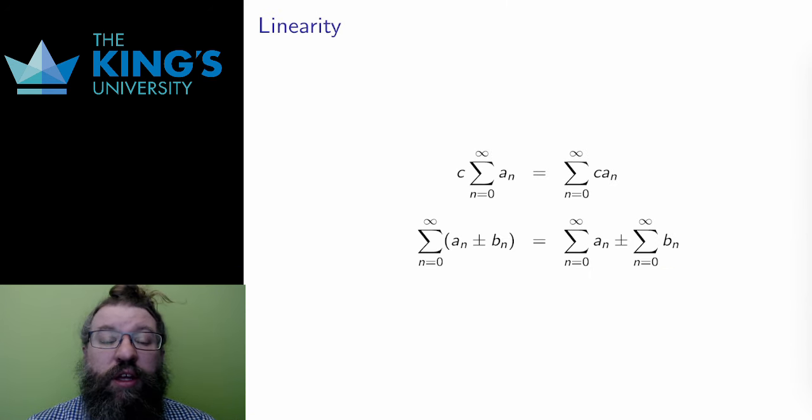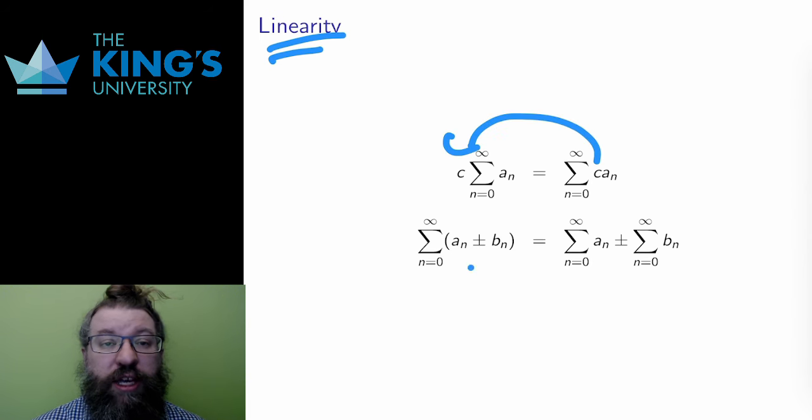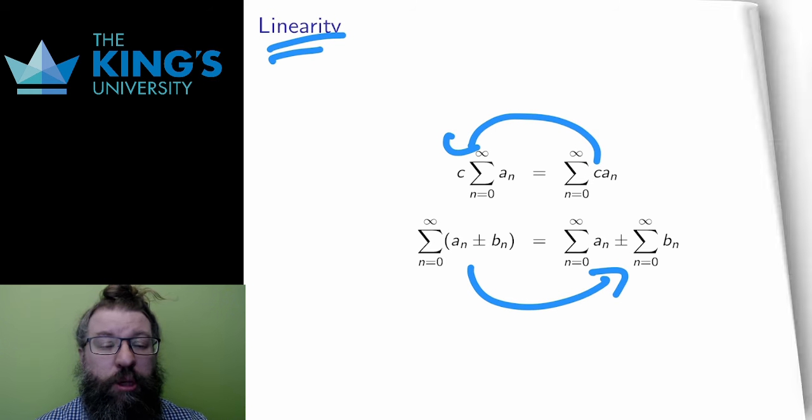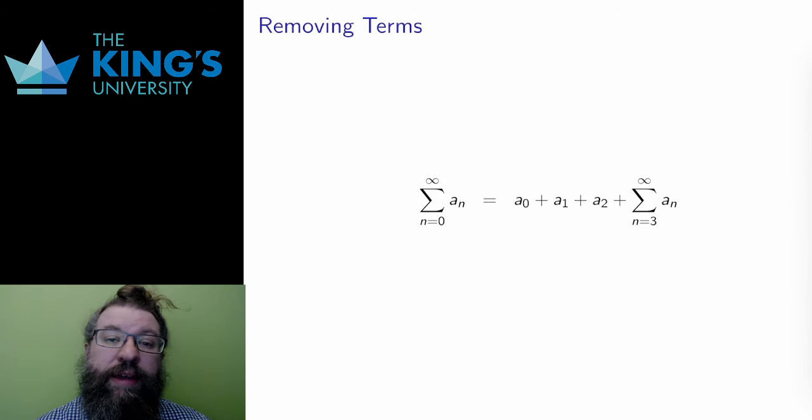The next thing in this video is some rules for manipulating series, and these are very similar to the rules for manipulating sigma notation that I taught in calculus one. Here we're just applying them to infinite series instead of finite sums. First series are linear. I can pull out constants, and a constant in this series is anything that doesn't involve the index. And I can split them up over addition and subtraction. All of the major operations in this course, limits, derivatives, integrals, are linear. Series are no exception.